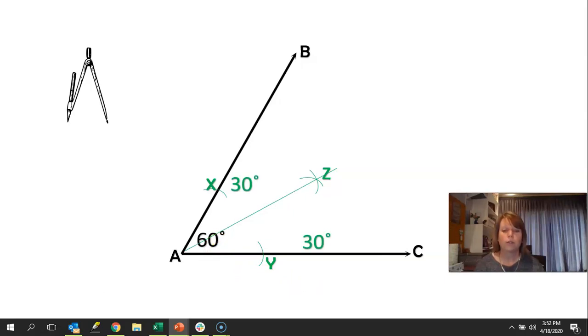And because this whole angle is 60 degrees, each of those two angles will be 30 degrees. Okay. So that is our green drawing. Now we're going to go further than that. And we're going to divide one of our 30 degree angles. So we're going to use ZAC to divide up and see if we can get two angles of 15 degrees.